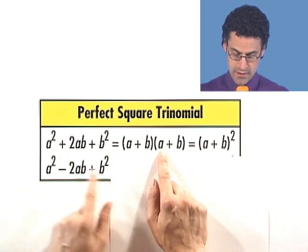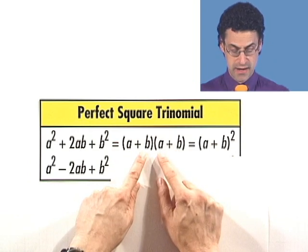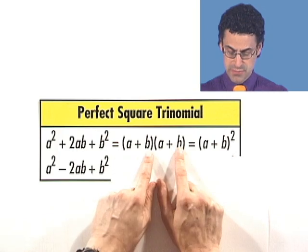a times a, a squared. Outer terms, an ab. Inner terms, another ab. That's 2ab plus b times b, b squared.